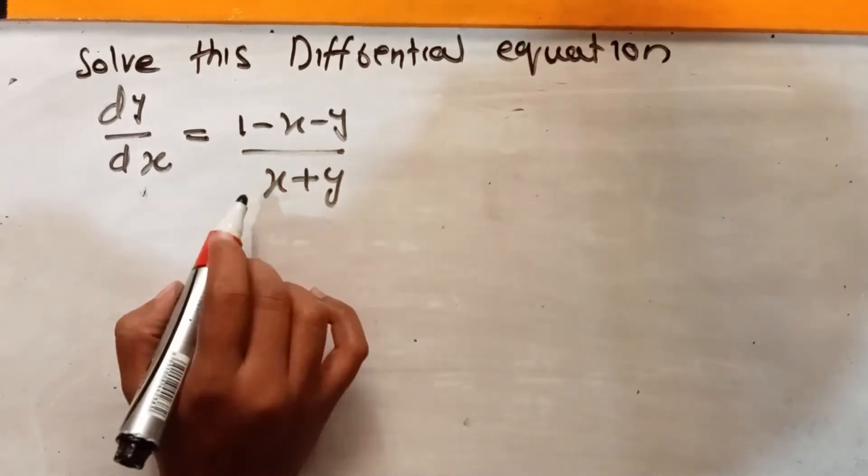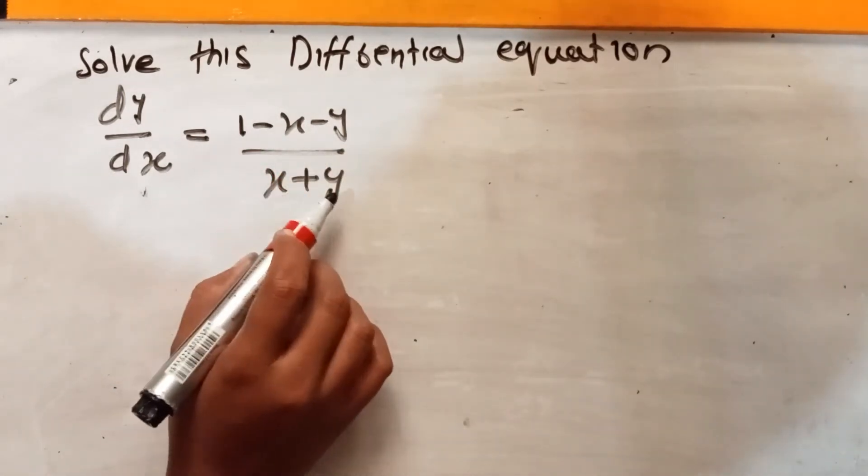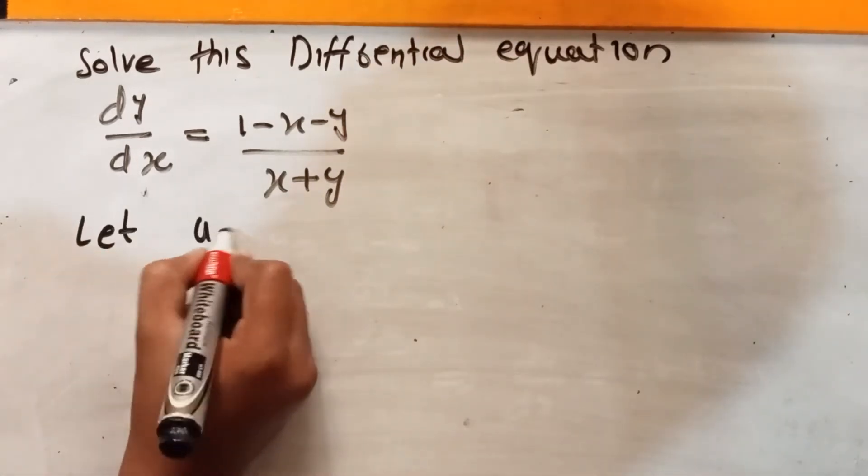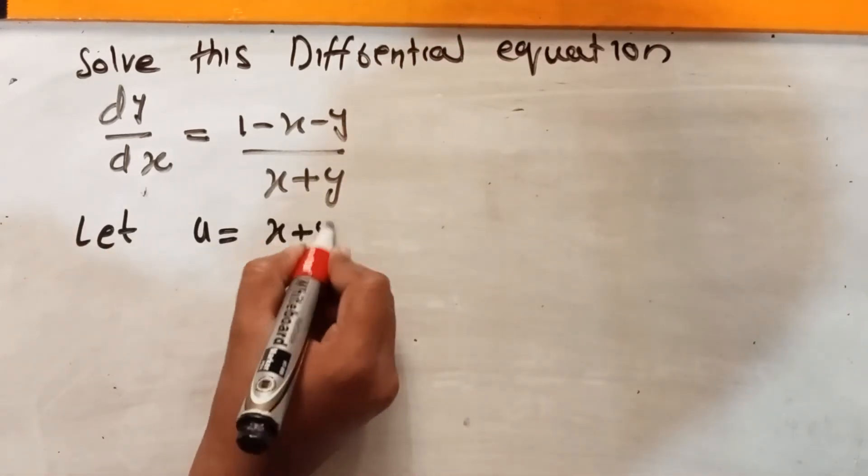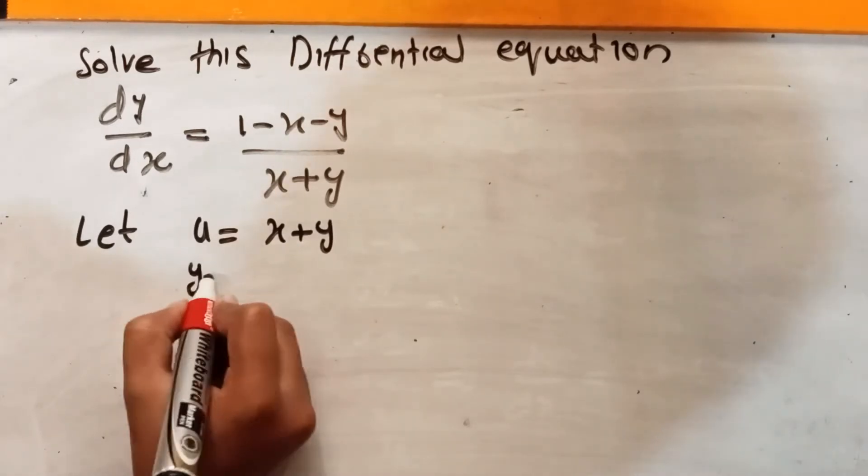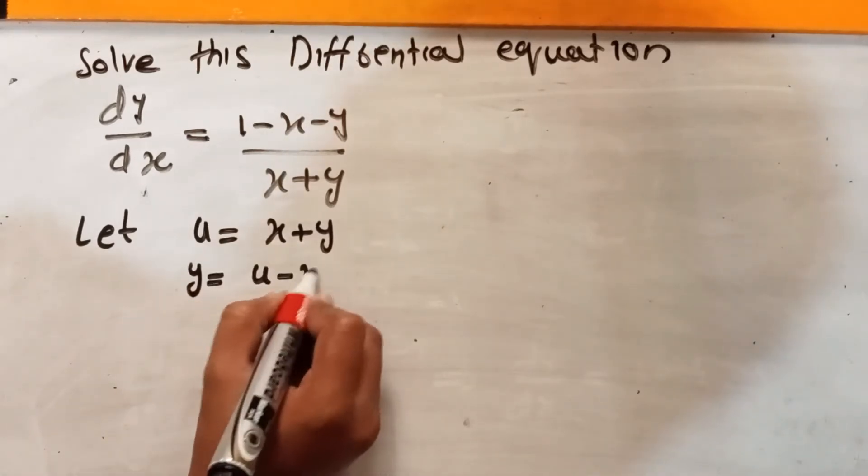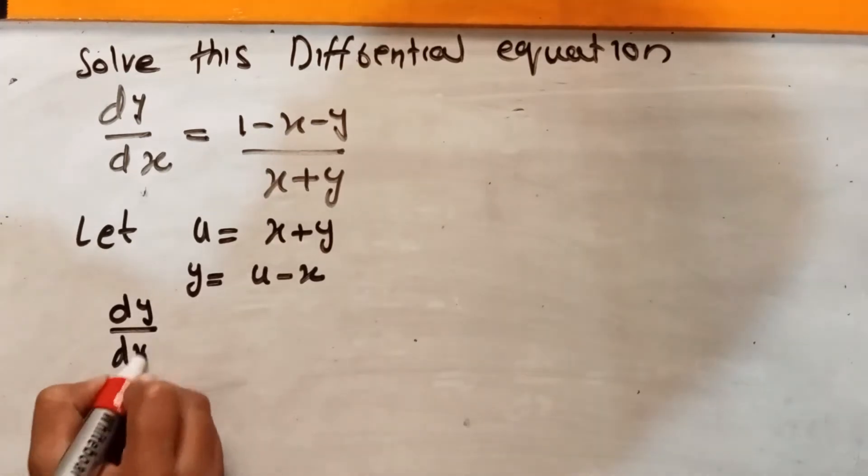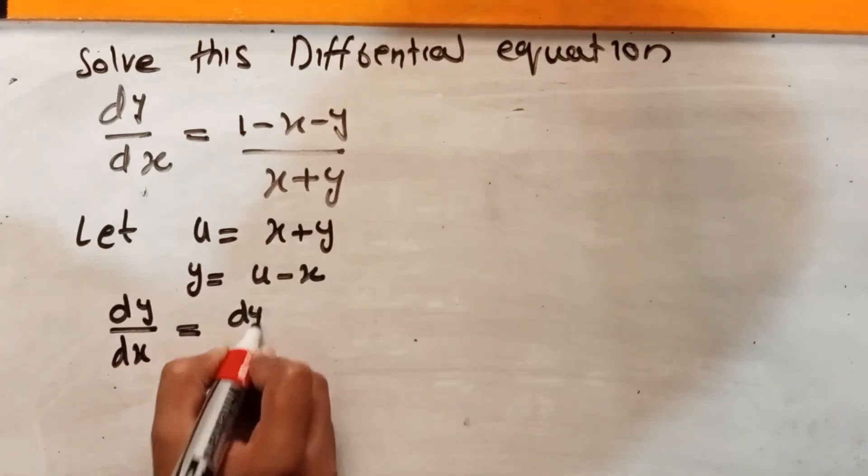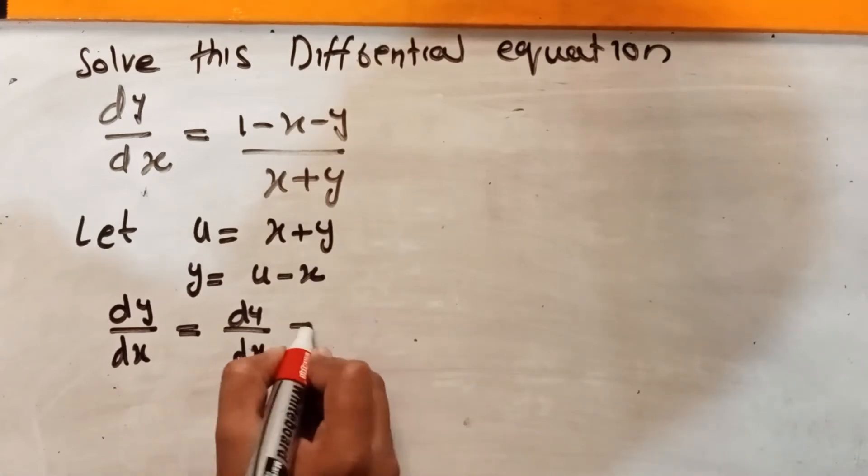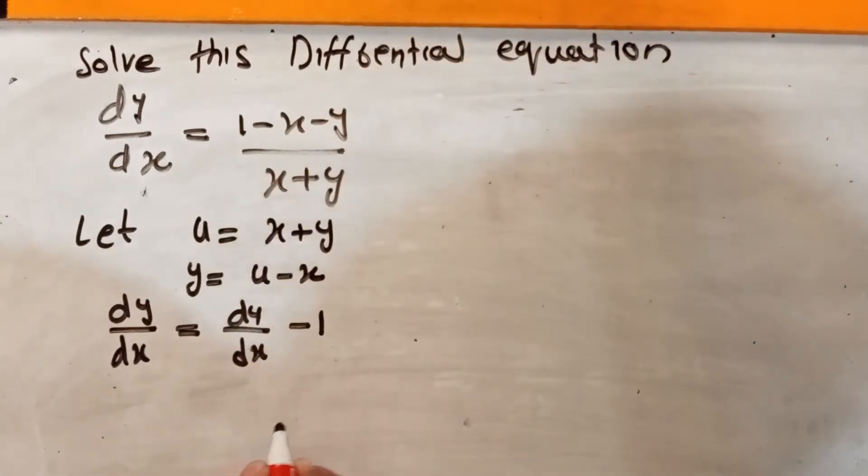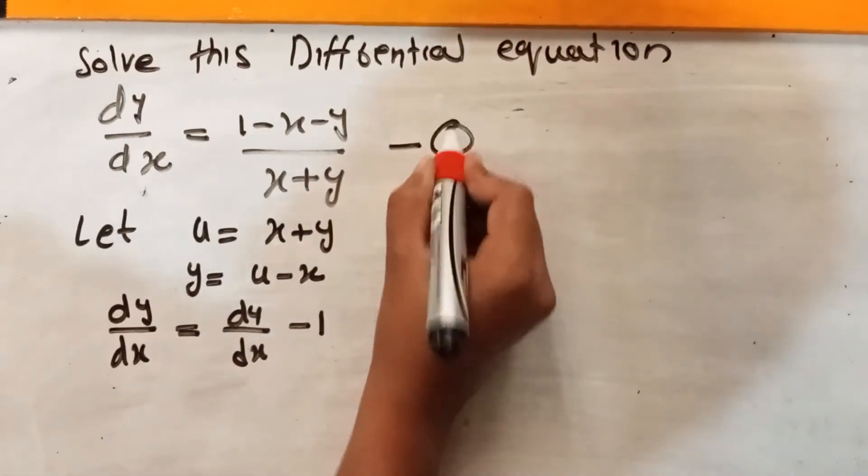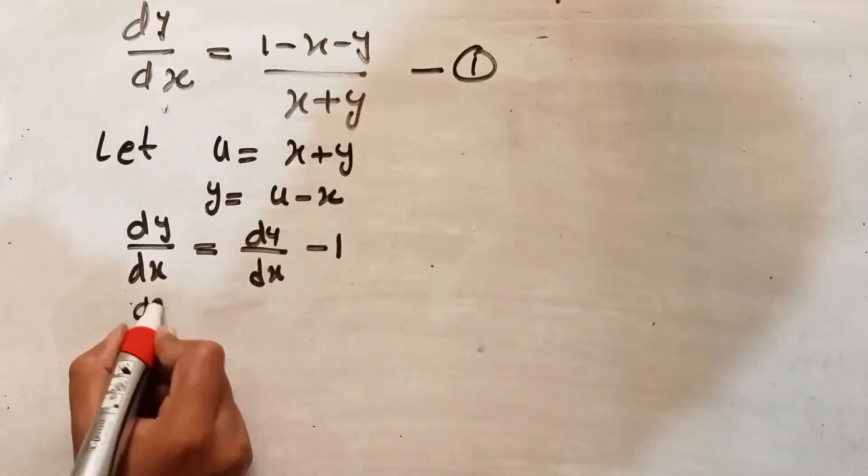Let u is equal to x plus y and y is equal to u minus x, and dy over dx is equal to du over dx minus 1. So equation 1 becomes du over dx minus 1 is equal to 1 minus u divided by u.